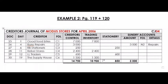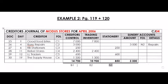Remember to reference your general ledger for the columns just below the column total. Creditors Control is balance sheet account number 1. Trading inventory is balance sheet account number 2. And stationery is nominal account number 1.